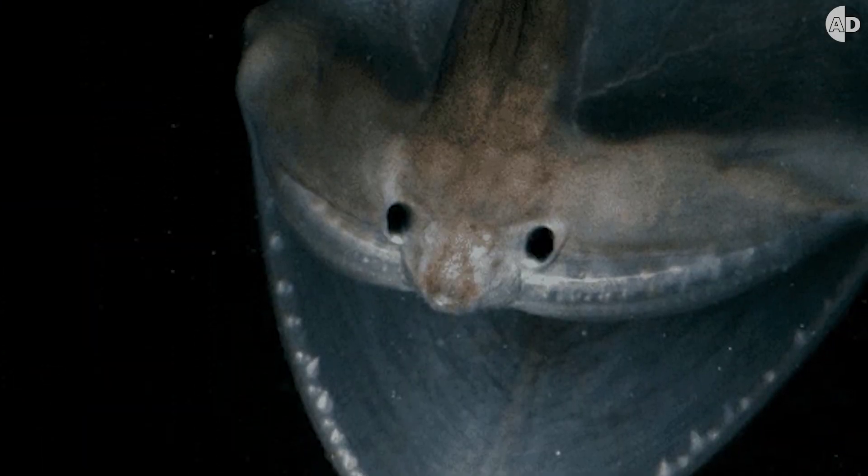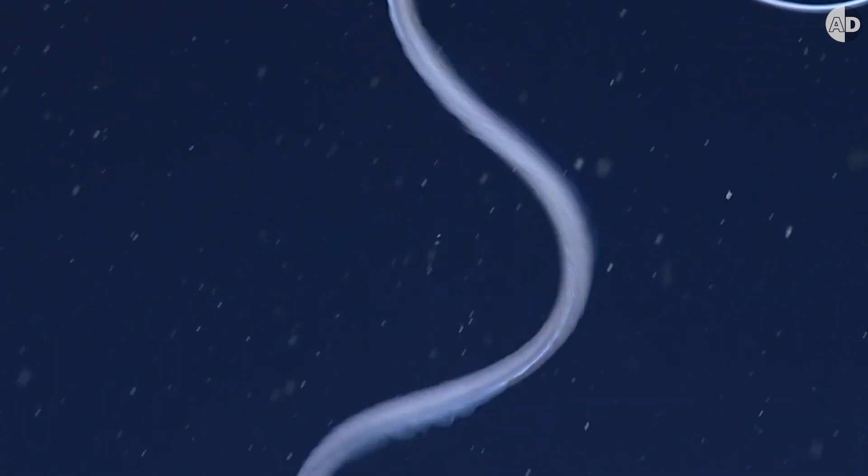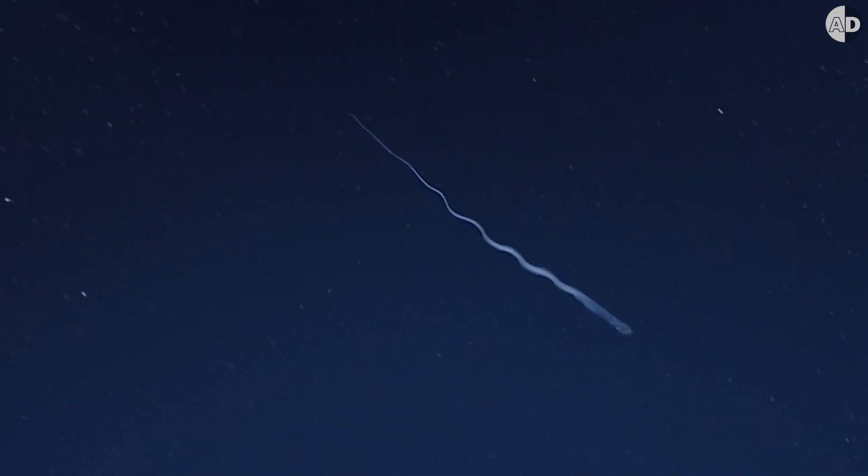Though its small eyes don't see very well, they're adapted only to sense faint light to help the eel detect bioluminescent flashes of potential prey.